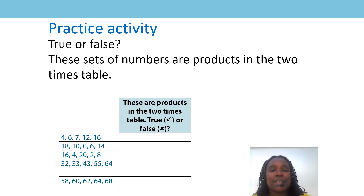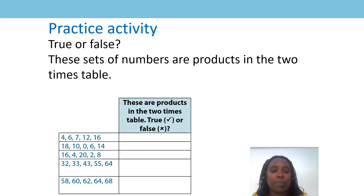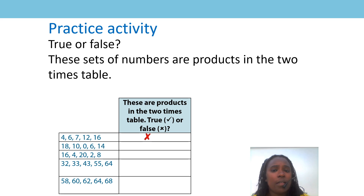4, 6, 7, 12, 16. You were asked to put a tick if it's true that these products are in the two times table, or a cross if it was false. What did you put for this first one? I'm going to read the numbers again: 4, 6, 7, 12, 16. That's correct — it is false. These products are not all in our two times table, so you should have put a cross.